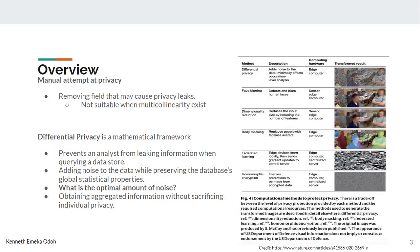There are multiple manual attempts to achieve privacy. You could remove all the identifying fields in your data, but most data can actually be re-identified by other data. For instance, demographic data like the suburb where you live could reveal how much you earn in most cases. So even if you remove identifying fields, you are not sure what's left or how much noise or how much data you need to remove.